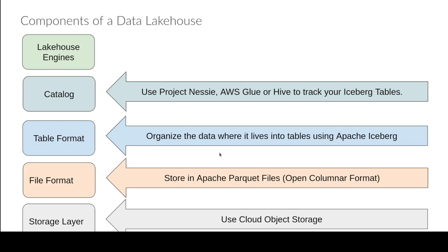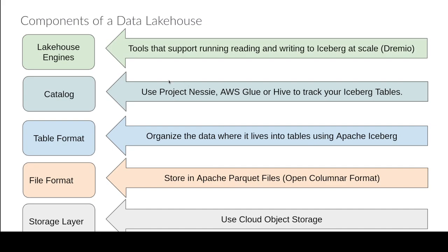A set of Apache Iceberg metadata tells us about an individual table, but there might be dozens or hundreds of tables on our data lake. We need something that tracks where to find the metadata for each table — that's the catalog. The catalog could be Project Nessie, AWS Glue, Hive, or another mechanism to track what tables exist and point us to the table format metadata, which then points us to the files on object storage.